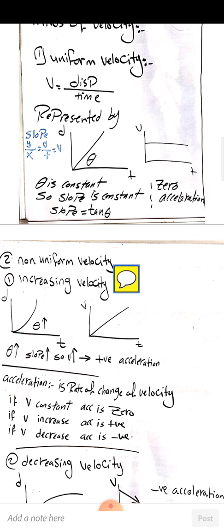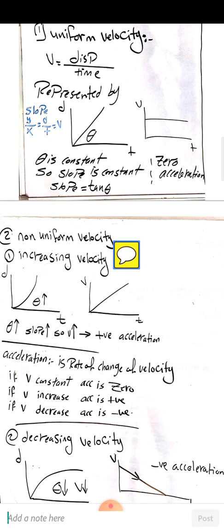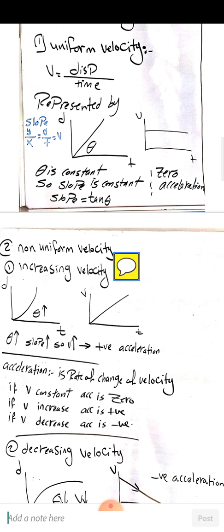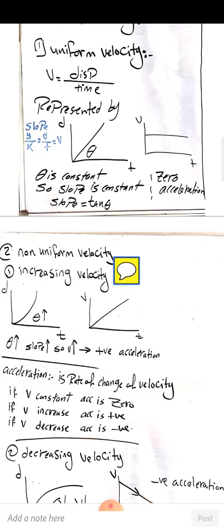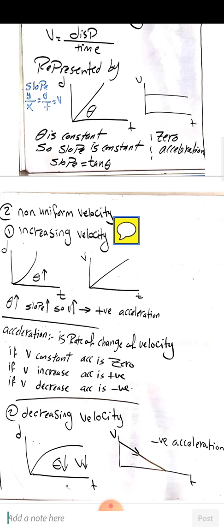Non-uniform velocity is represented by either increasing or decreasing velocity. For increasing velocity, the displacement-time graph shows a curve where θ is increasing, so tan(θ) increases, meaning the slope (velocity) is also increasing. In the velocity-time graph, the relation is a straight line with constant θ, representing positive uniform acceleration. Remember: if velocity is constant, acceleration is zero; if velocity increases, acceleration is positive uniform; if velocity decreases, acceleration is negative uniform.